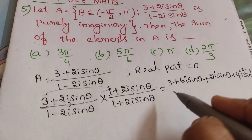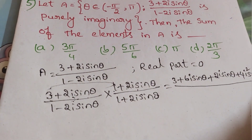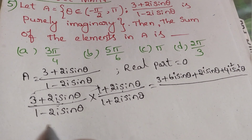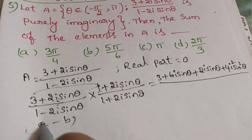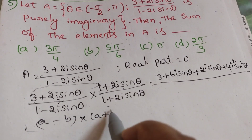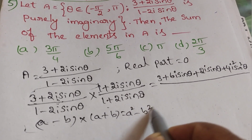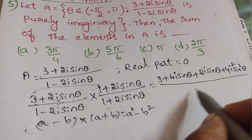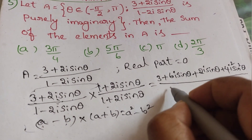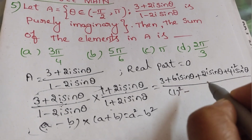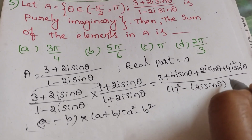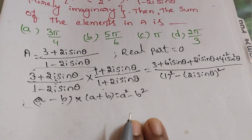For the denominator, use the formula a-squared minus b-squared where a is 1 and b is 2i sin theta. So the denominator is 1 squared minus (2i sin theta) squared, which gives 1 minus 4 i-squared sin-squared theta.